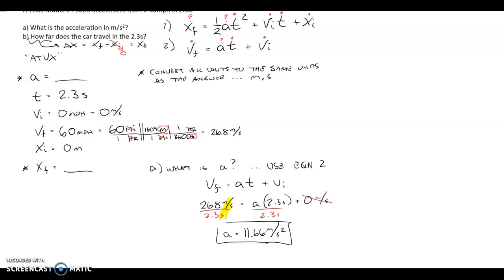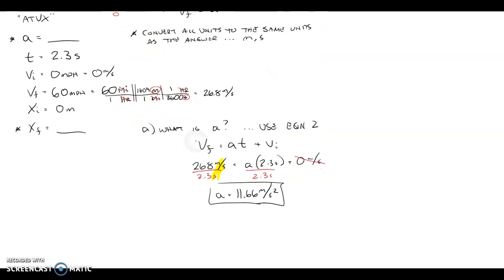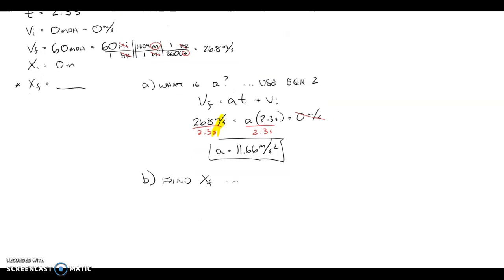Now, if I want to find part b, now we know a, and so we can find x final using that first equation. For part b, we want to find x final, and we can use our x final equation. x final is 1 half a t squared plus v initial t plus x initial. When I plug in what I have, I now know a, so 1 half of 11.66. My time to get there is still 2.3 seconds. My initial velocity is 0 meters per second times 2.3 seconds plus 0 meters.